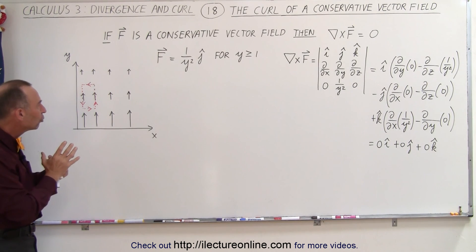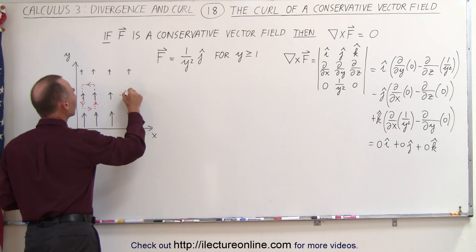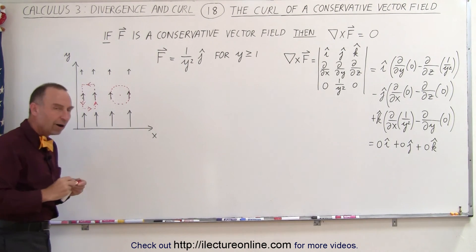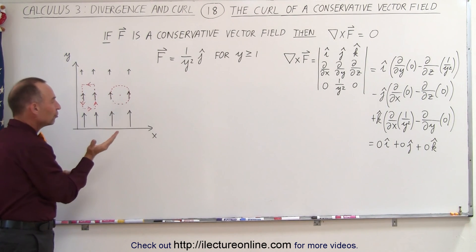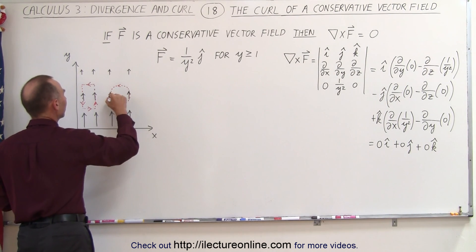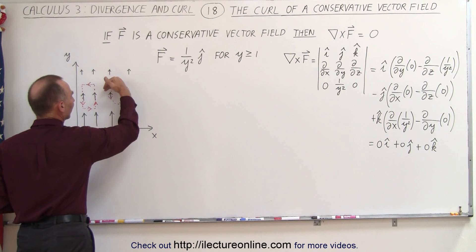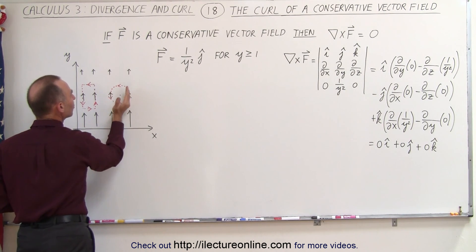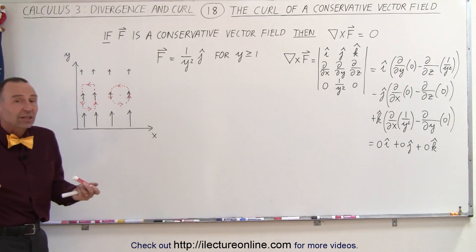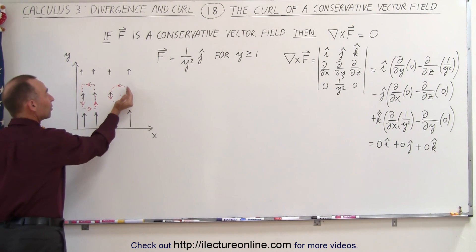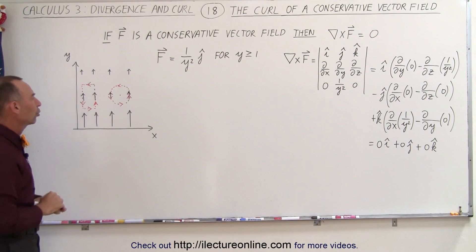Now let's calculate the magnitude of the curl using the techniques we used before. We pick a point and circle around it. For the direction of circulation, if I take my right hand and curl my fingers counterclockwise, my fingers go in the opposite direction of the vector field on one side and the same direction on the other side. Because of the symmetry, the contribution on one side versus the other cancels out — there's no net indication of direction. This again tells us we should get a zero curl.